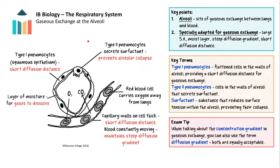Here is a diagram of gaseous exchange in the alveoli. Oxygen brought in by inhaled air dissolves in the moist lining of the alveoli and diffuses from inside the alveoli, where it is in higher concentration, into the blood, where it is in lower concentration, down its concentration gradient. It then binds to haemoglobin inside red blood cells to be carried to the respiring cells. Carbon dioxide collected from the respiring cells is in higher concentration in the blood than in the alveoli, so it diffuses from the blood into the alveoli down its concentration gradient. Exhalation then lowers the concentration of carbon dioxide inside the lungs again.